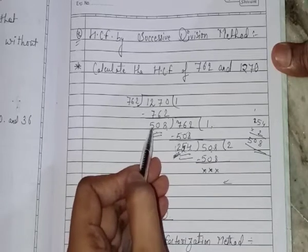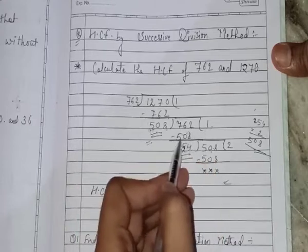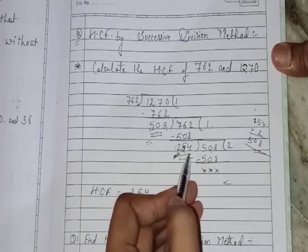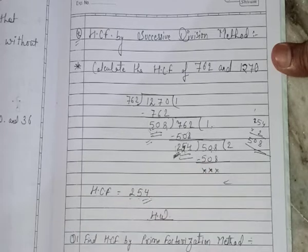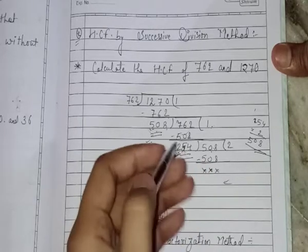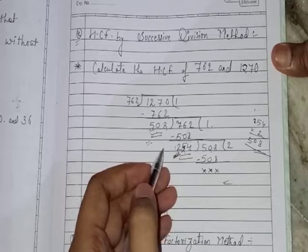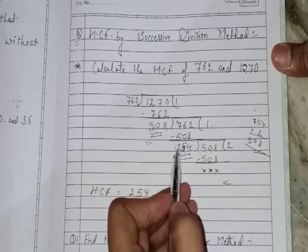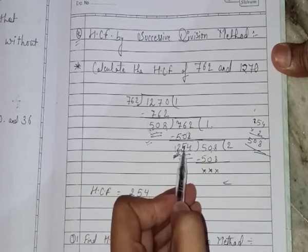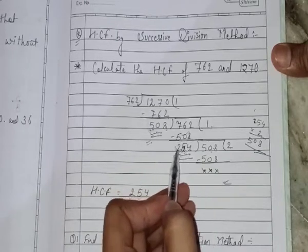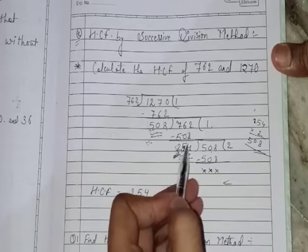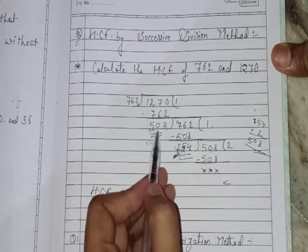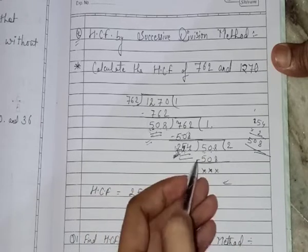What we will do, that is 508. So the remainder is 254. This is the second remainder. We will continue this until we get the remainder 0. Again, this second remainder, that is 254 will divide the first remainder. And this first remainder, that is 508 will work as a dividend.